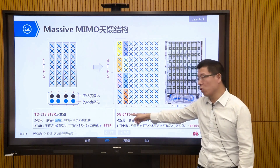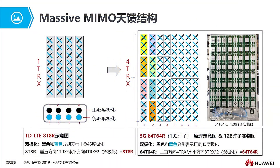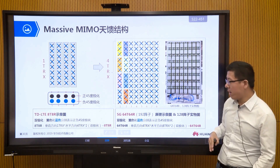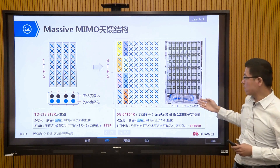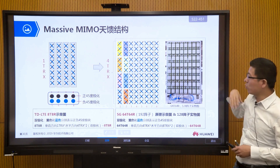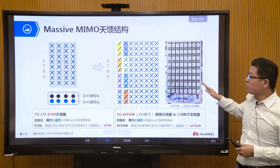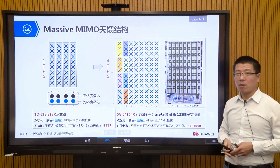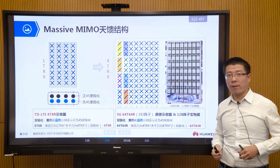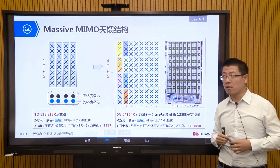This is our schematic diagram of a massive MIMO antenna — we can see there are many arrays inside. This array antenna technology is not just applied in the civilian field. In the early days, it was used in the military field — our array scanning radar on destroyers and early warning aircraft, including airborne high-end array radar on high-end fighter jets, all use massive MIMO principles.